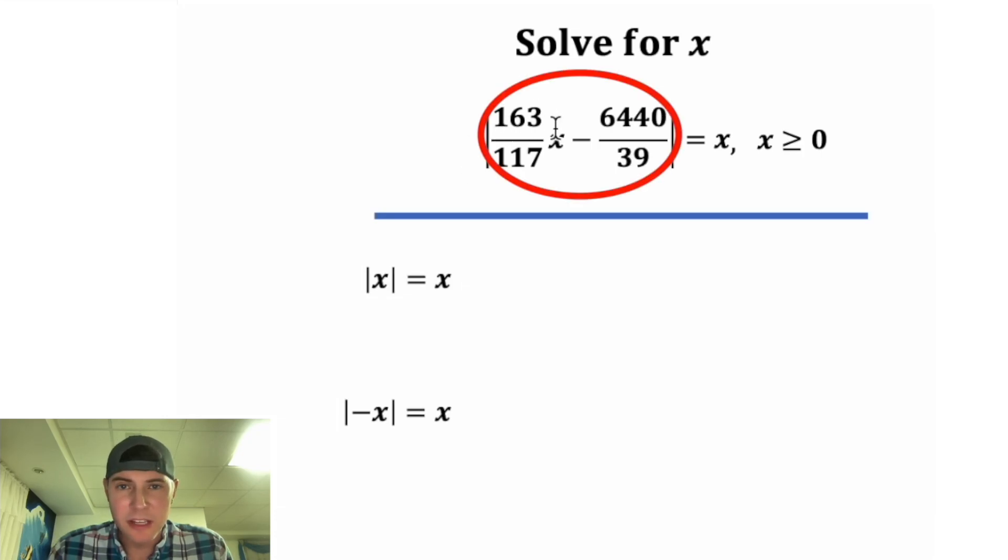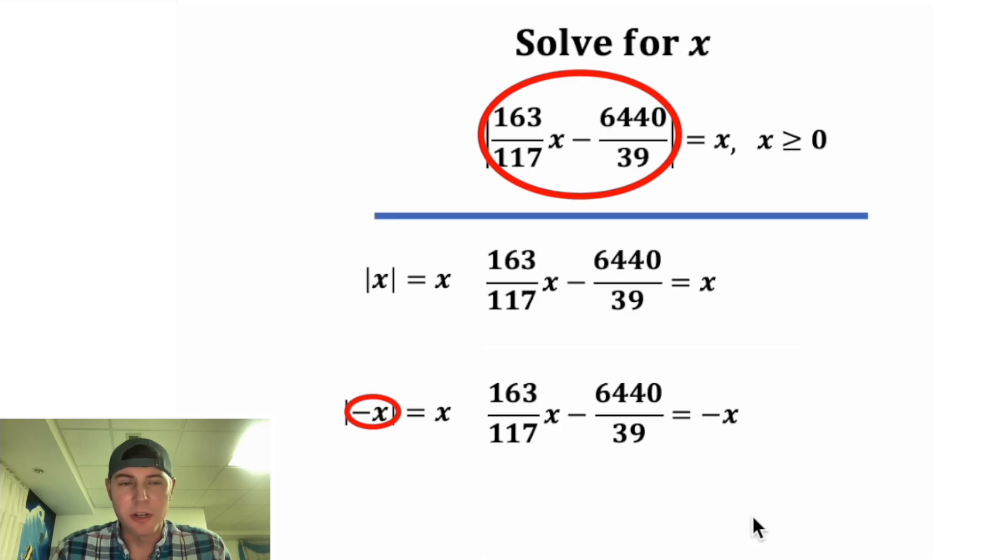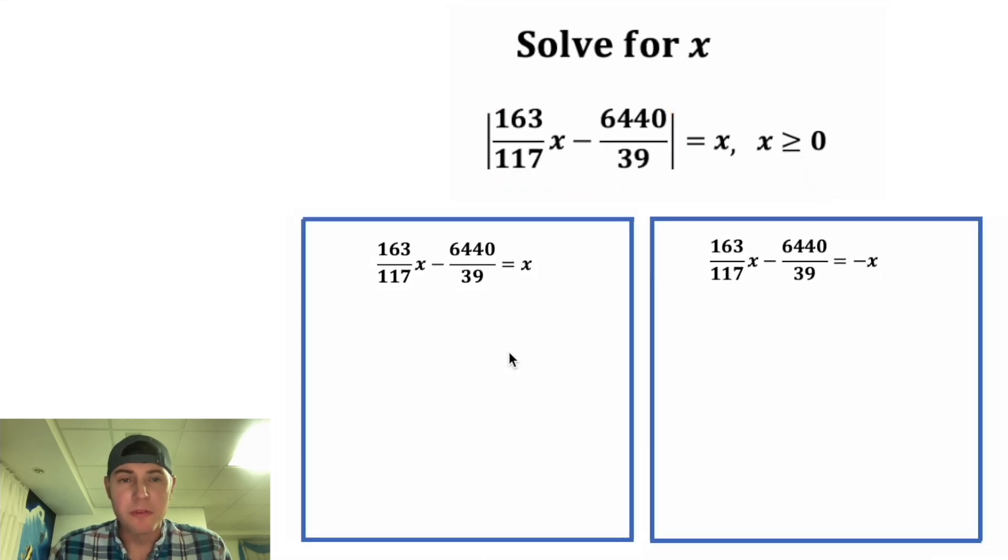So for the first one, we need the stuff inside the absolute value to be equal to x, and that's this right here. And for the second one, we need the stuff inside the absolute value to be equal to negative x. That's this equation right here. So in order to solve this equation, we need to solve both of these equations.